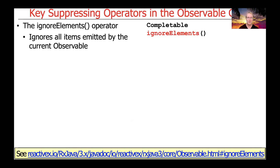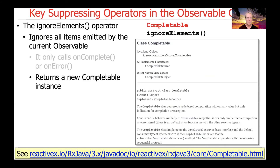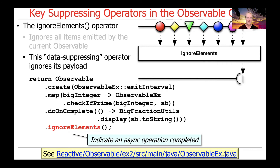Finally, we're going to talk about the ignore elements suppressing operator. This operator can be used to ignore all items emitted by the current observable — it only calls onComplete or onError, it never calls onNext, and it returns a new completable instance, where completable basically indicates something has completed. This data suppressing operator essentially ignores its payload altogether, unlike filter which conditionally ignores certain items, or take which limits the number emitted. We often use this at the end of our observable chains to indicate that an asynchronous operation has completed.